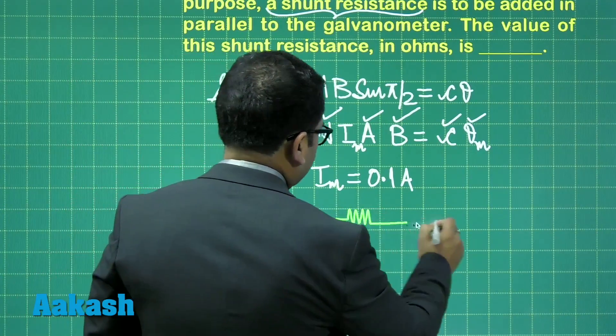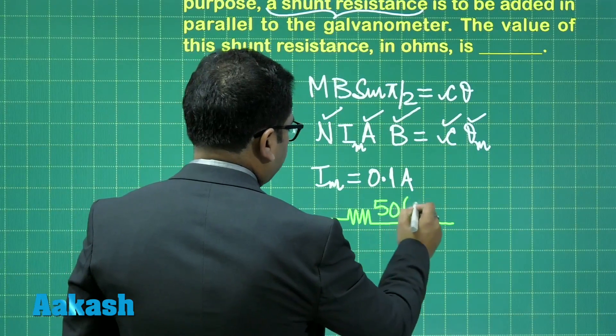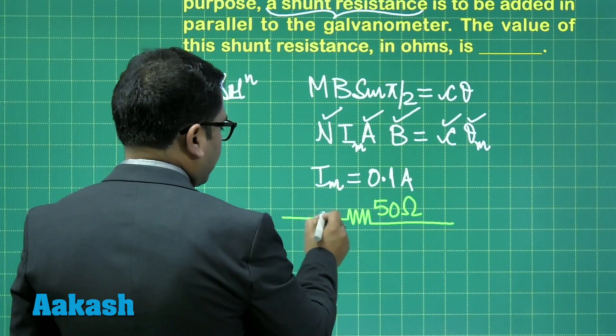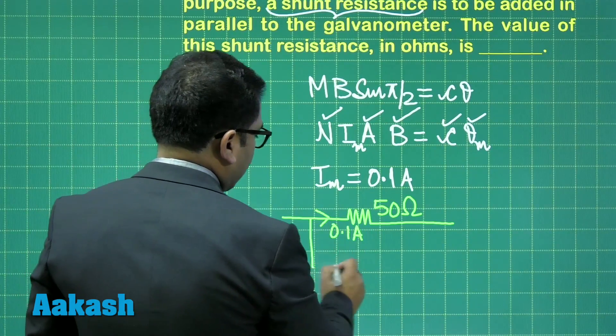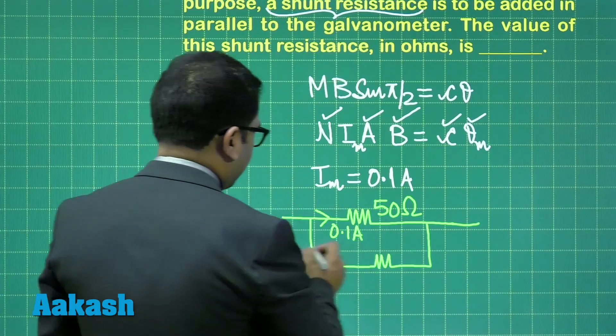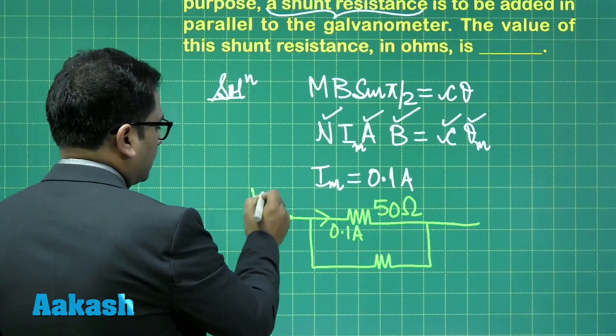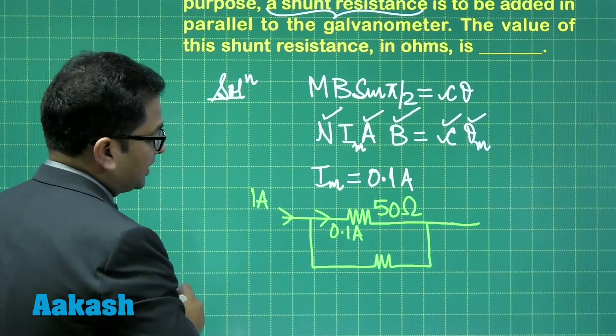So here the situation would be something like this: this is the galvanometer with resistance 50 ohm and the deflection maximum is 0.1 ampere. For that, I need to connect a shunt if I need to convert it into 1 ampere ammeter range.